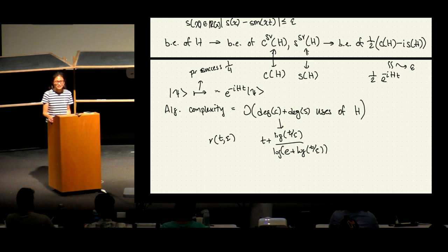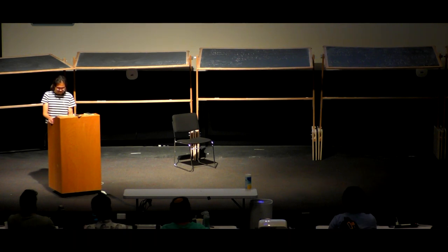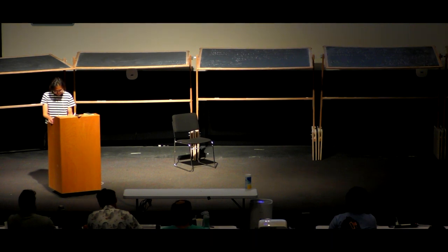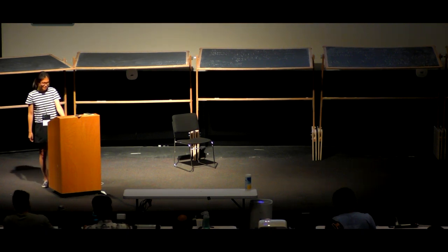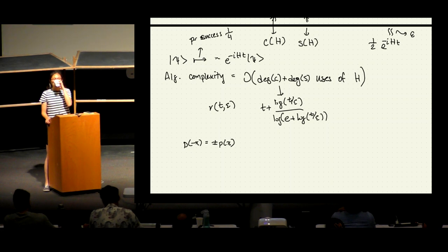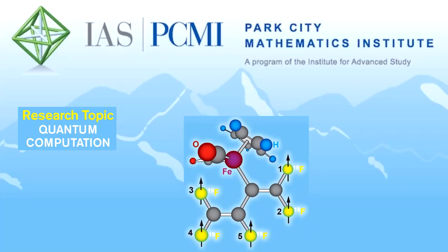That's the lecture. A clarification on odd and even functions: an odd function satisfies P(−x) = −P(x) and an even function satisfies P(−x) = P(x). If you have a Hermitian matrix, you can consider functions that are not odd or even, but for rectangular matrices we only consider those two types.